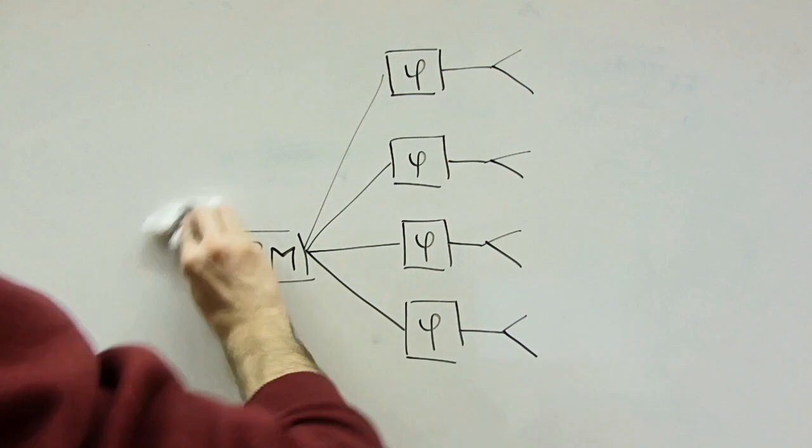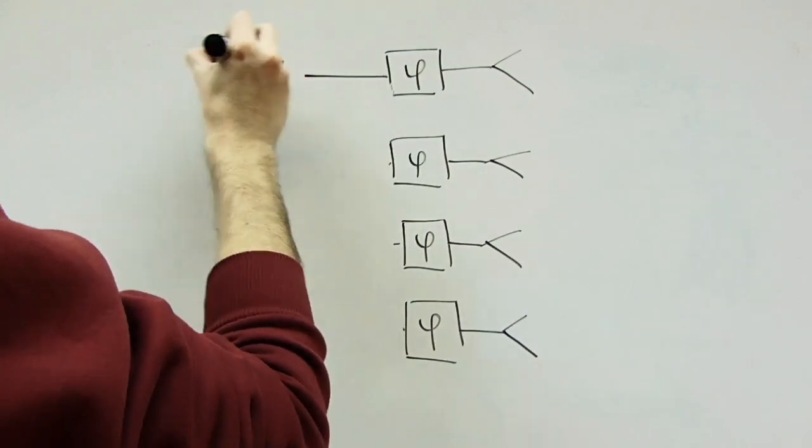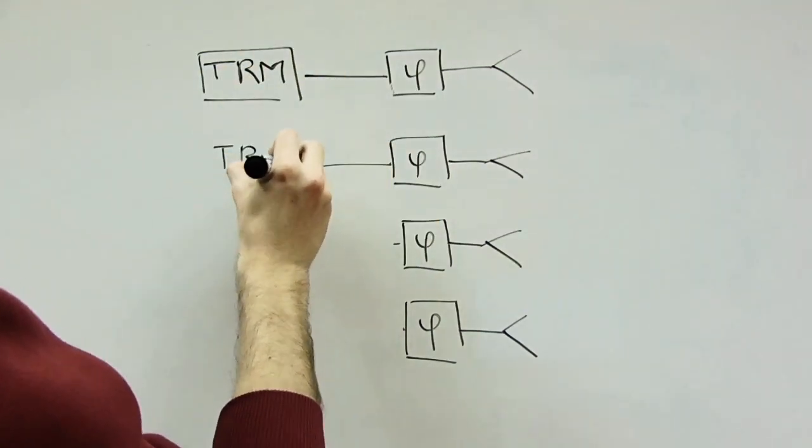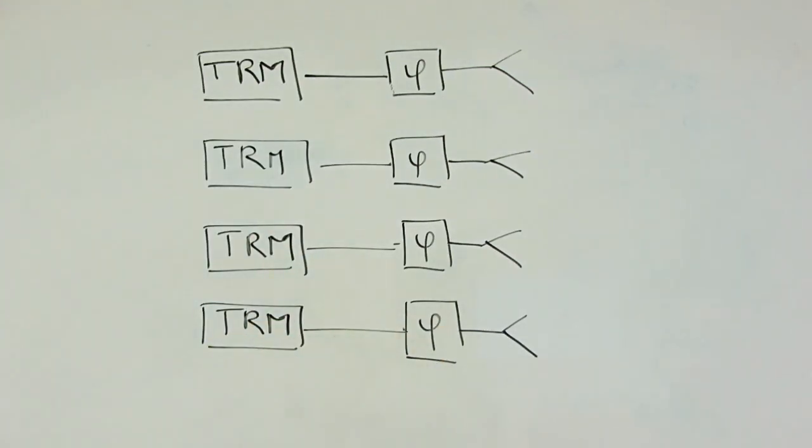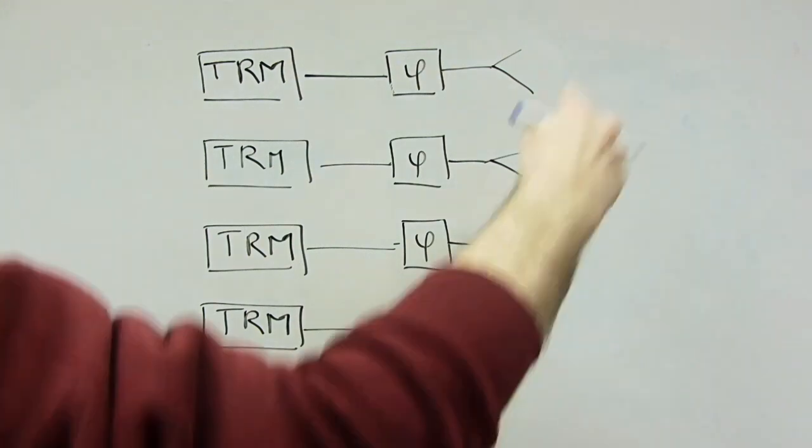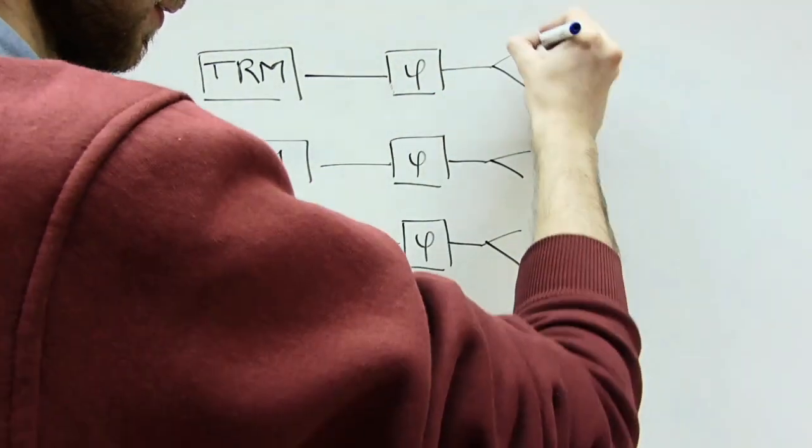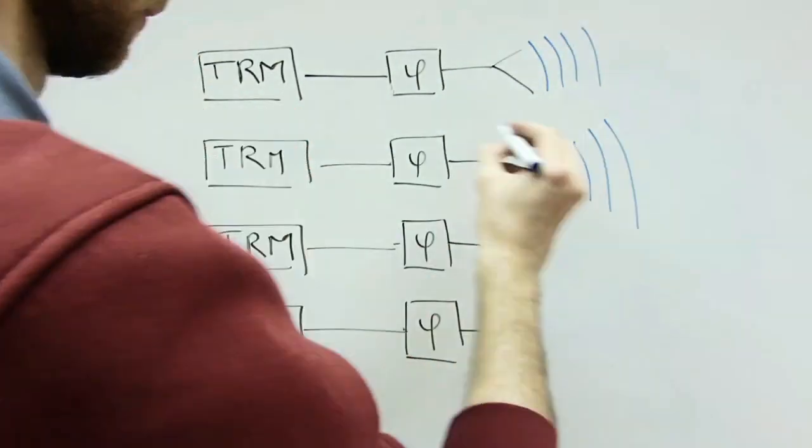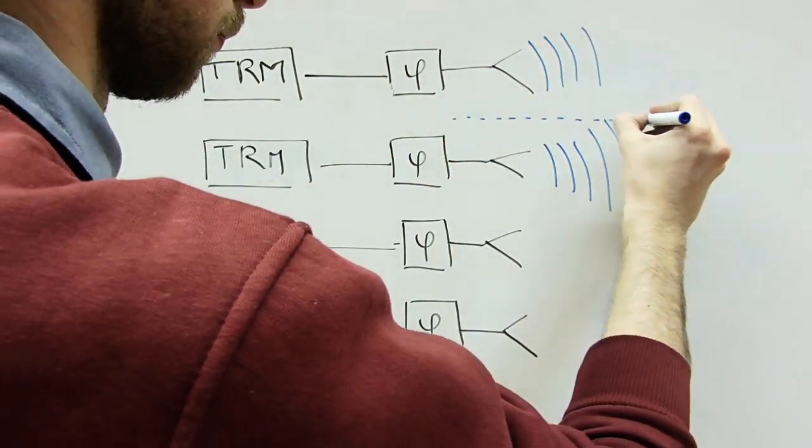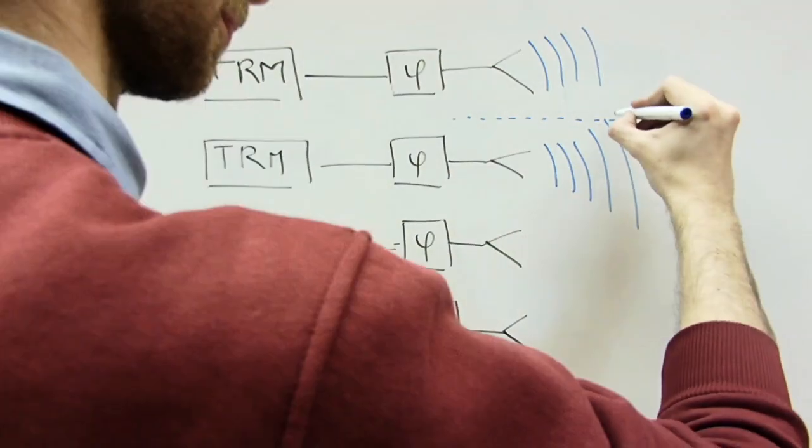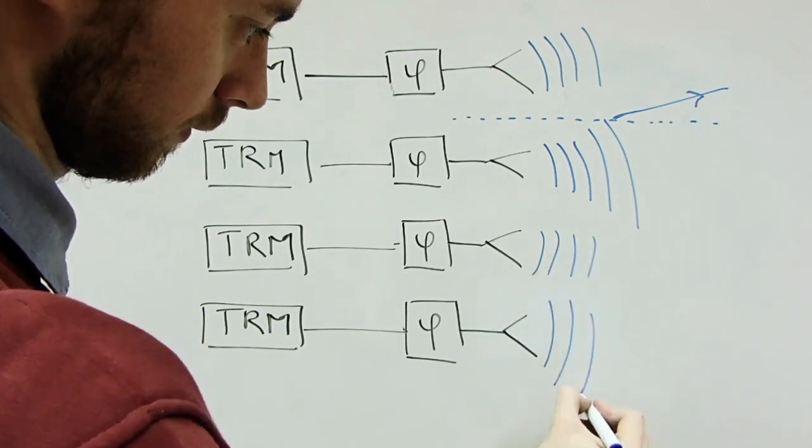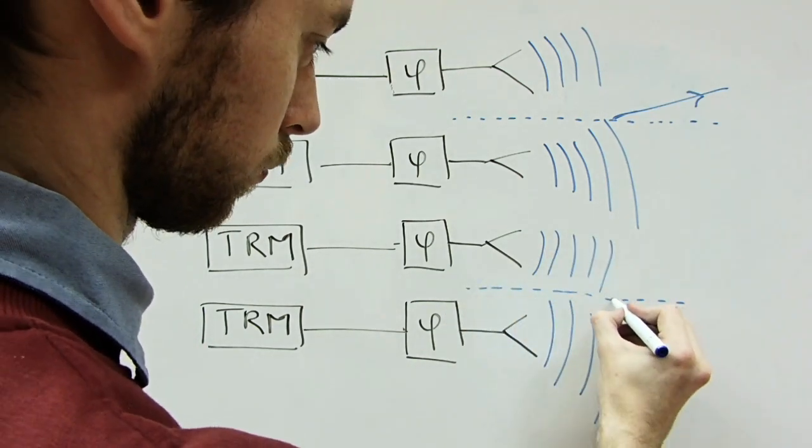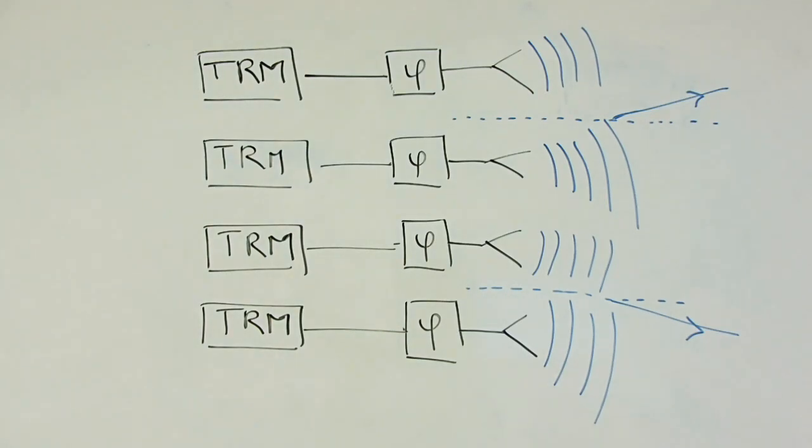Each antenna element is connected to a small solid-state transmit-receive module or TRM under the control of a computer, which performs the functions of either a transmitter or a receiver for the antenna. This contrasts with a PESA, in which all the antenna elements are connected to a single TRM. And there you have it, a device that can radiate multiple beams of radio waves at multiple frequencies simultaneously, in different directions, without even moving the antenna.